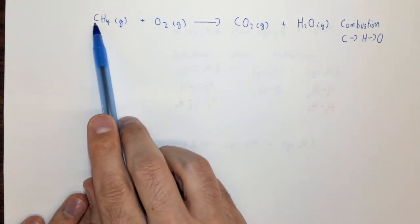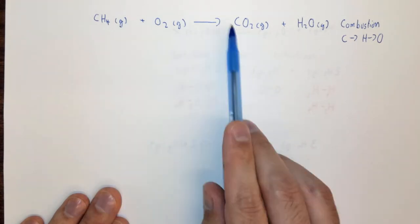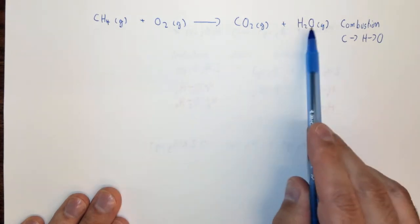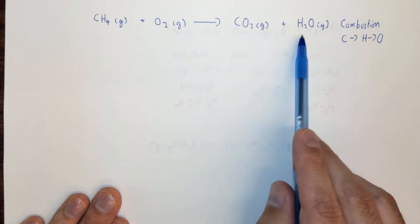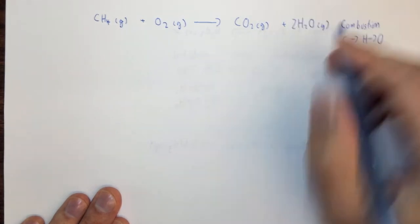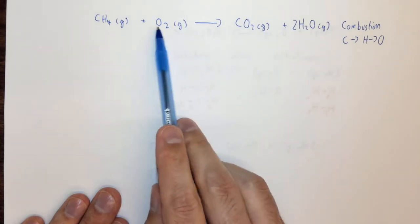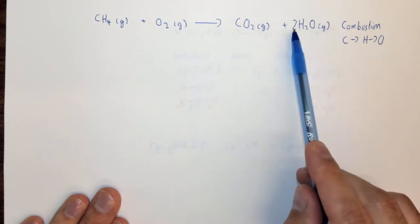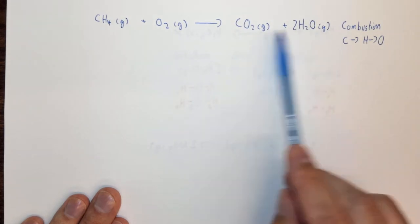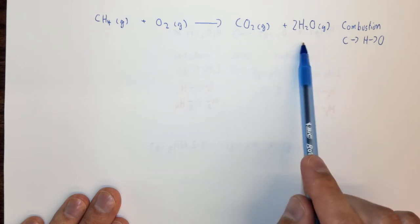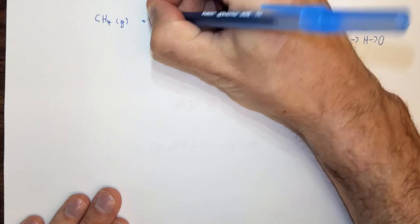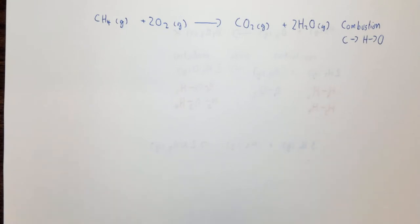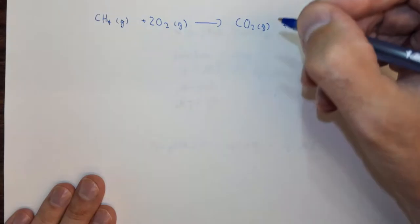All of the carbon in the hydrocarbon goes into carbon dioxide. So if I have one C here, I should have one C here — carbon is balanced. All of the hydrogen of the hydrocarbon goes into water. So if I have four H's here, I need to make two waters so I can have a total of four hydrogens. Now carefully balancing oxygen: we have two oxygens in CO₂ plus two times one, or two more oxygens from water, for a total of four oxygens on my product side. If I have four oxygens on my product side, I need two O₂'s — four oxygens on my reactant side. So the balanced equation is CH₄ + 2O₂ → CO₂ + 2H₂O.